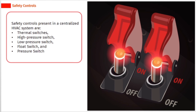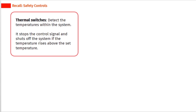Safety controls present in a centralized HVAC system include thermal switches, high pressure switch, low pressure switch, float switch, and pressure switch. Thermal switches detect the temperatures within the system.